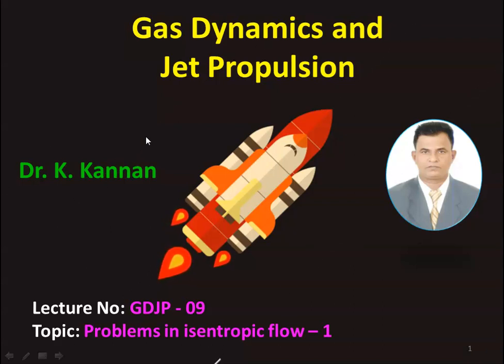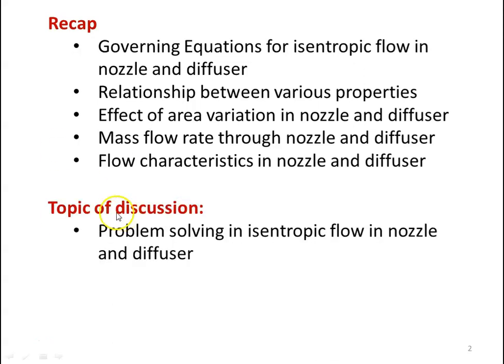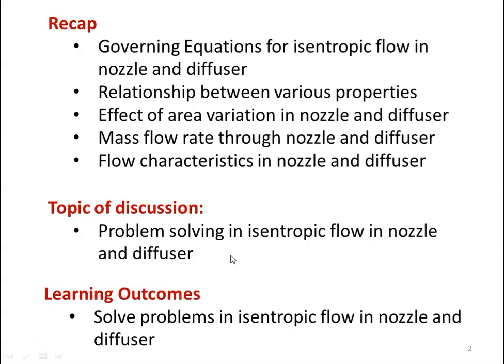We are going to solve problems in the isentropic flow. In the earlier lectures on isentropic flow, we studied the governing equation, relationship between various properties, effect of area variation in the nozzle and diffuser, mass flow rate through the nozzle and diffuser, and flow characteristics. Here we are going to solve problems from Anna University question papers. The learning outcome: at the end of the lecture, the student will be able to solve problems in isentropic flow in nozzle and diffuser.